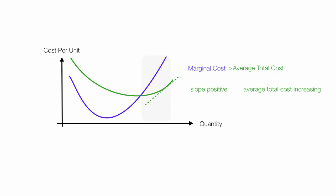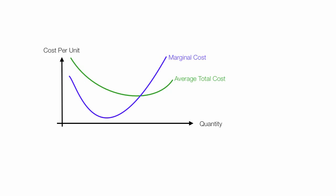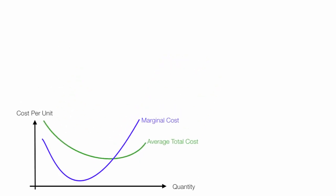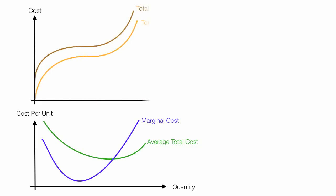Now I'm going to talk a little bit about why the curves have the shapes that they do. In the first part of the curve, we have economies of scale. In the second part of the curve, we have diseconomies of scale.